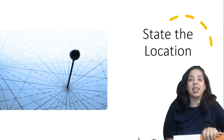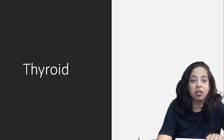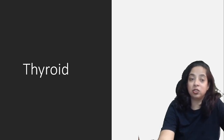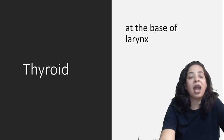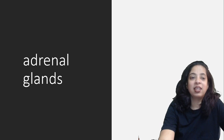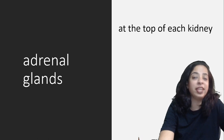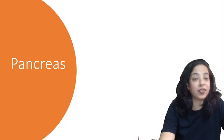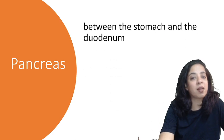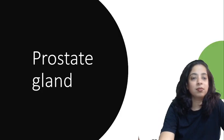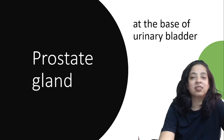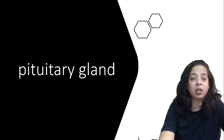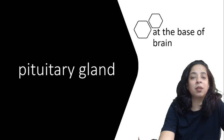The first section is 'State the Location.' You have to be very specific when mentioning the location. Thyroid: at the base of the larynx. Adrenal glands: at the top of each kidney. Pancreas: between the stomach and duodenum. Prostate gland: at the base of the urinary bladder. Pituitary gland: at the base of the brain.